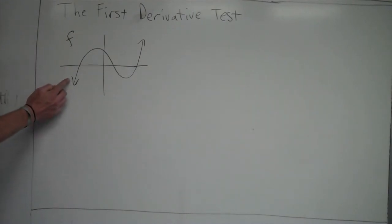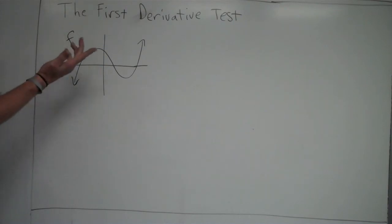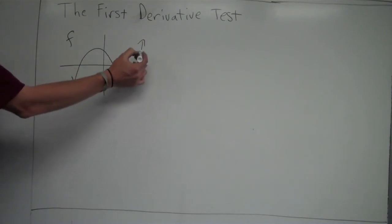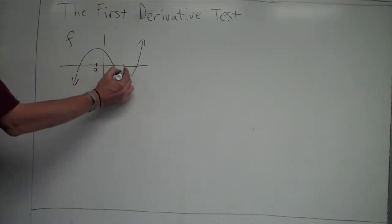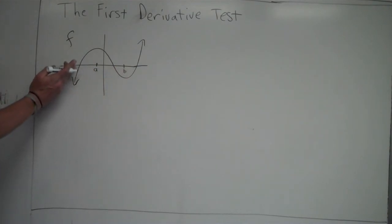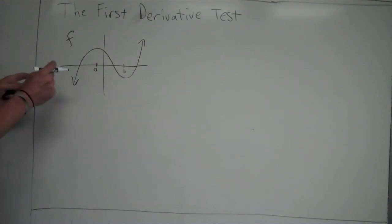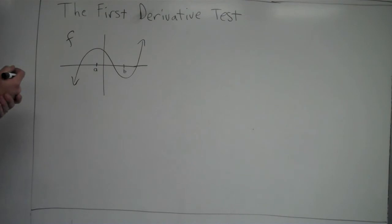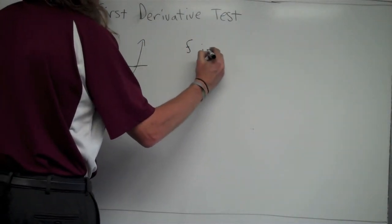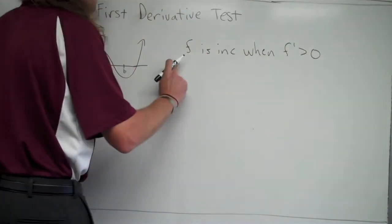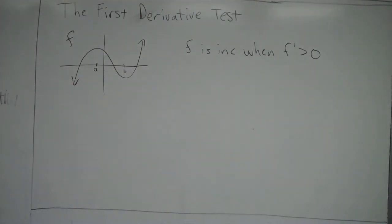For this function f, where the slope is positive — as you look at the graph from left to right and the y-values get larger — you can see that happening here and again over at this section of the graph. From negative infinity up to x = a, the graph is increasing. The same thing happens from b onward. During those times when the graph is increasing, the slope is positive, meaning the derivative is positive. So: f is increasing when f prime is greater than zero. That is huge — it will be used throughout calculus and you have to remember it.